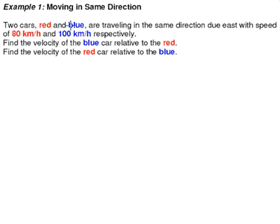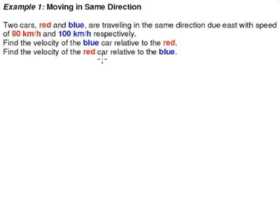Example 1: Moving in the Same Direction. Two cars, red and blue, are traveling in the same direction due east with speeds of 80 km/h and 100 km/h respectively. Find the velocity of the blue car relative to the red car, and find the velocity of the red car relative to the blue car.